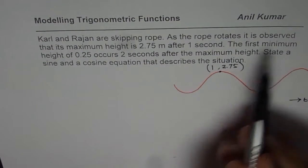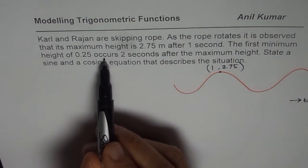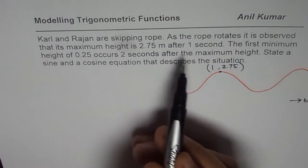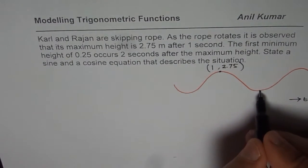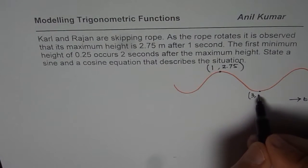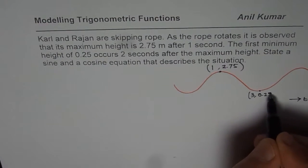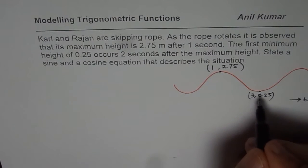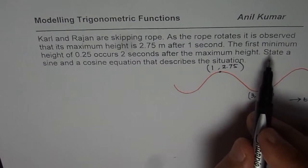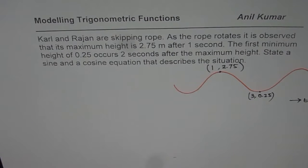The first minimum height of 0.25 occurs 2 seconds after. So after 2 seconds, time will be 3. After 2 seconds, this height is 0.25. This is an alternate way of working on realized situation and modeling. State a sine and a cosine function to describe this situation.